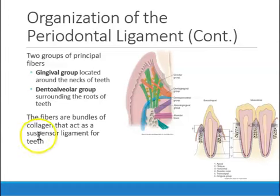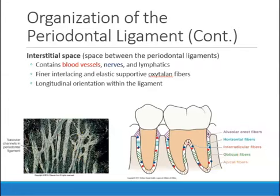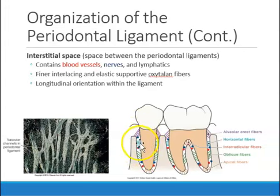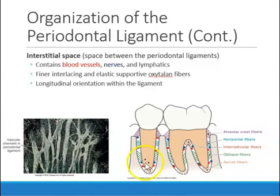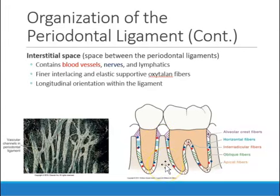These fibers are there to suspend our teeth within the socket, within the jaw. Looking at the interstitial space — the space between the periodontal ligament fiber bundles — there are blood vessels, nerves, and lymphatic vessels in those spaces. The space between the periodontal ligament fibers is known as the interstitial space.